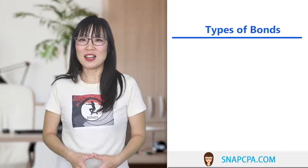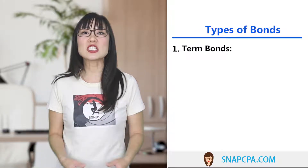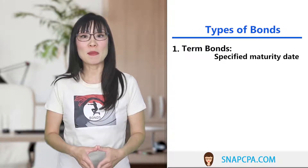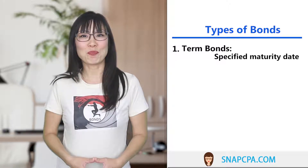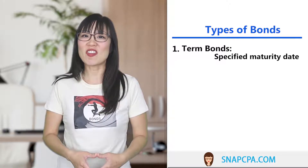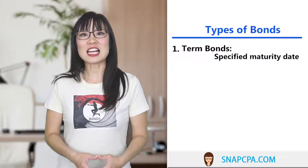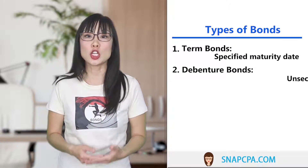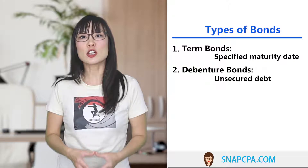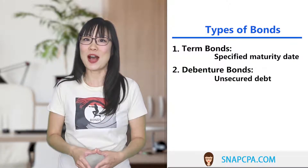Now let's wrap up with the different types of bonds. First, there are term bonds — these bonds have a specified term, meaning length, and they mature on one specific date. For Specter, that date was December 31st, Year 5. Next, there are debenture bonds, which means the bond is unsecured — there's no specific asset that acts as collateral.